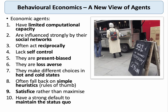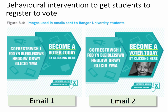So in that context, let's think about some behavioral nudges. There was an attempt to increase student voter registration at the University of Bangor in Wales. They sent out two emails to two different groups — both bilingual as required in Welsh law. The first email had a simple image: 'become a voter today by clicking here.' The second email had exactly the same image except they added a picture of the iconic Nelson Mandela. The instinctive view is that the second email would be more effective, but the evidence suggests that email two is no more effective than email one.